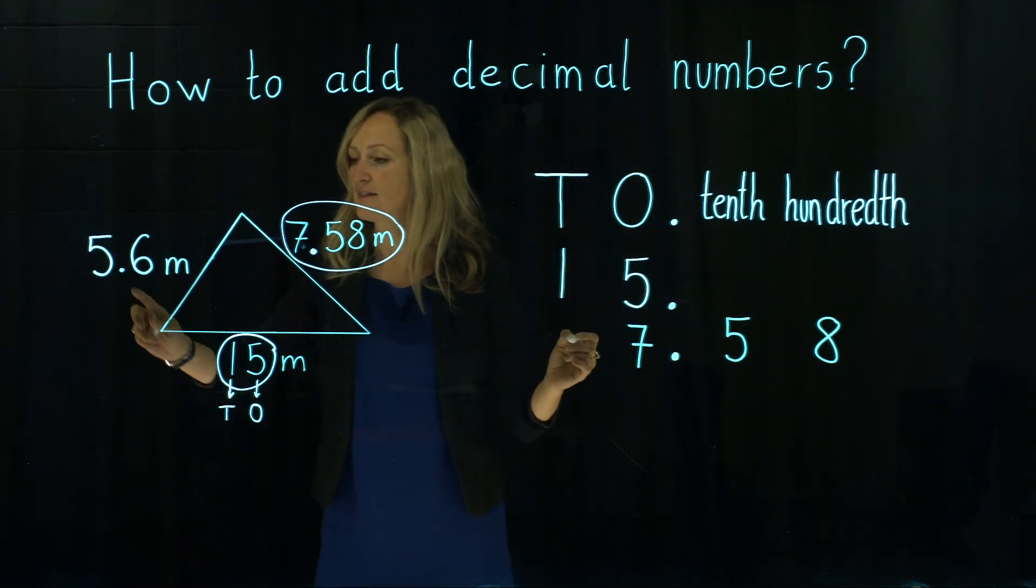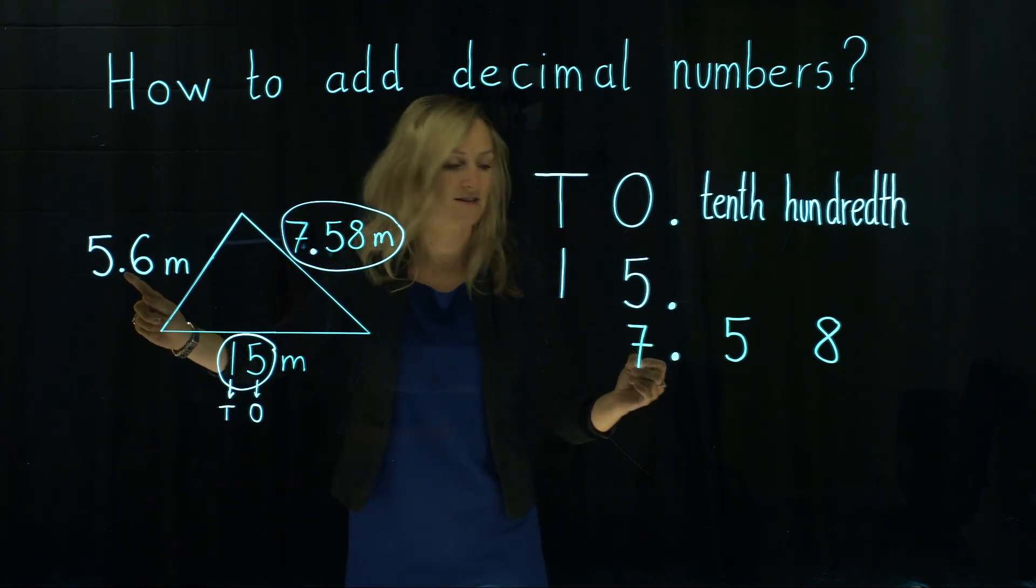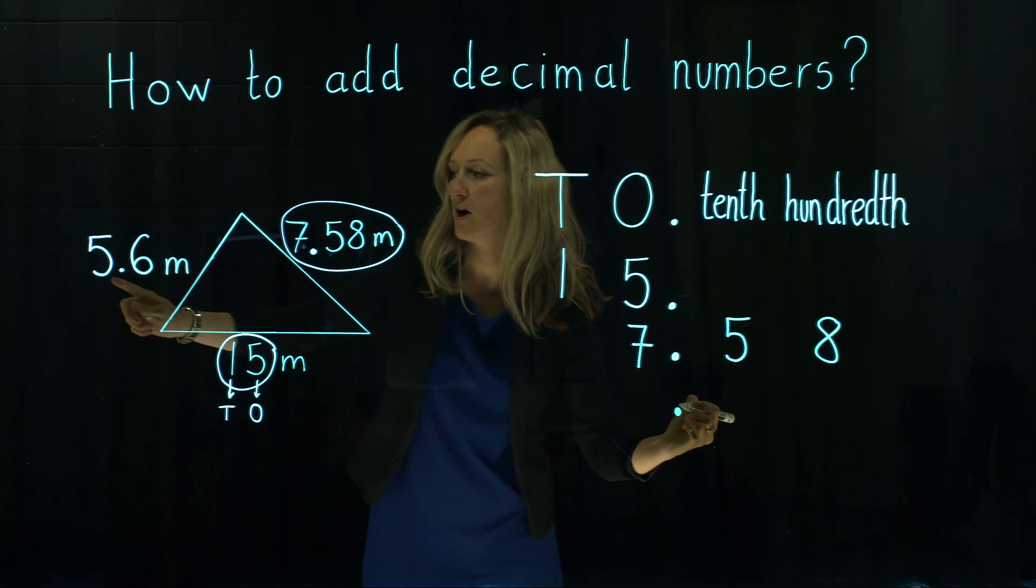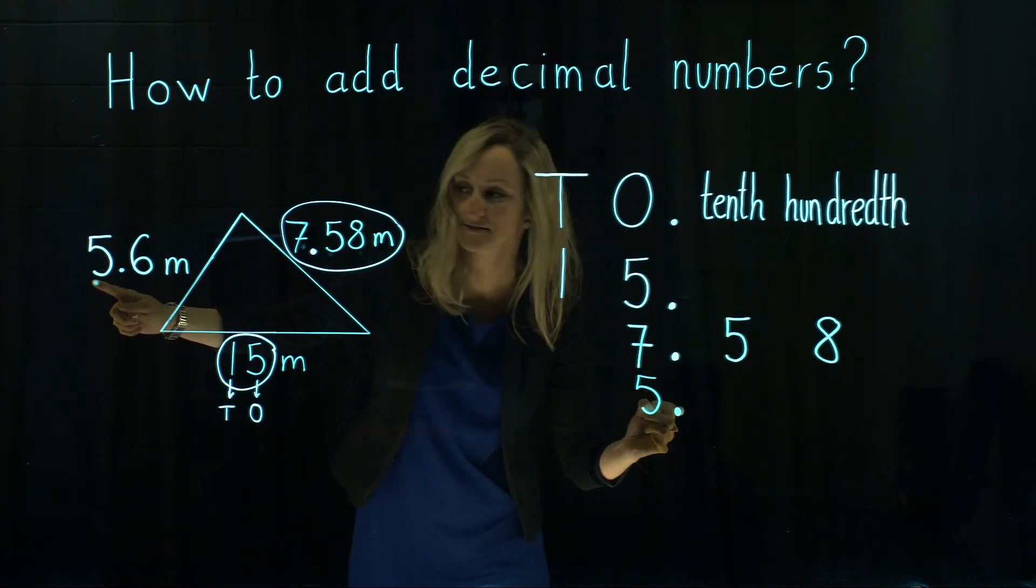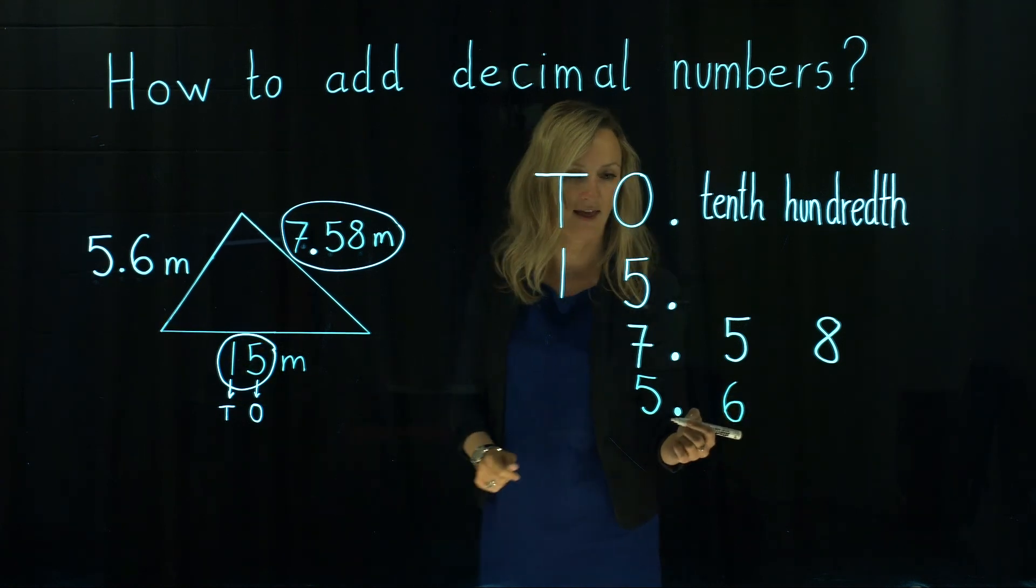Then the last, the smaller number is 5.6. 5.6 the decimal point goes under the decimal point. On the left hand side we have five ones and on the right hand side we've got just six tenths.